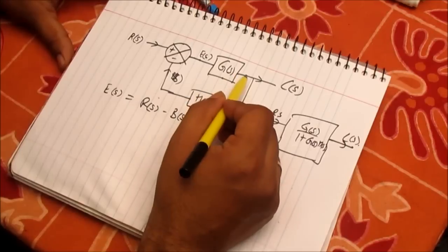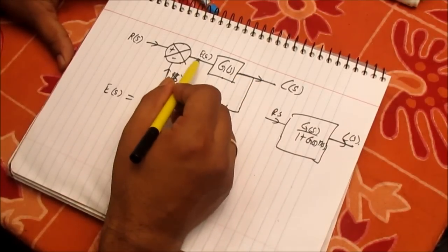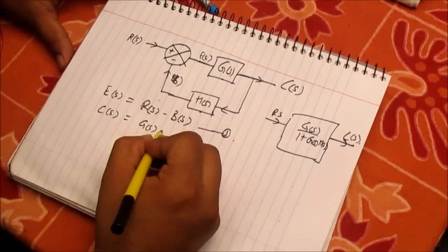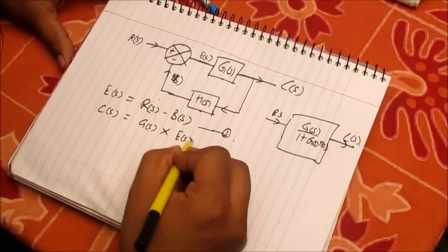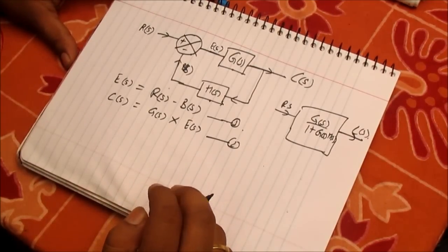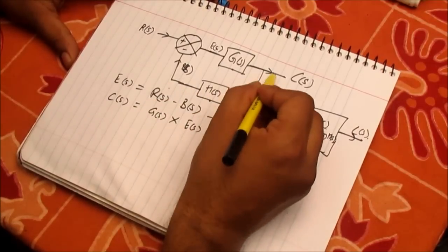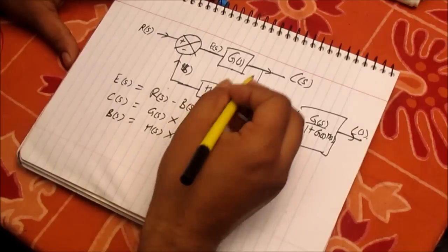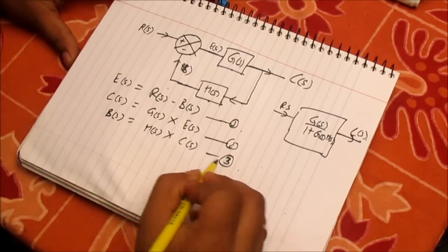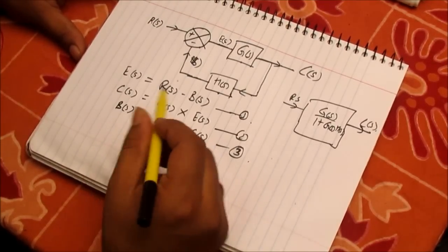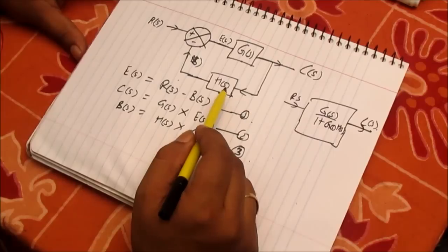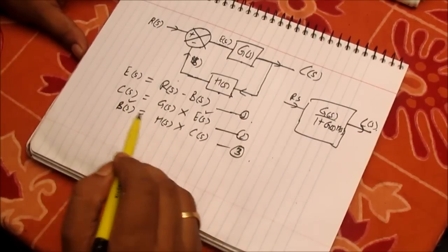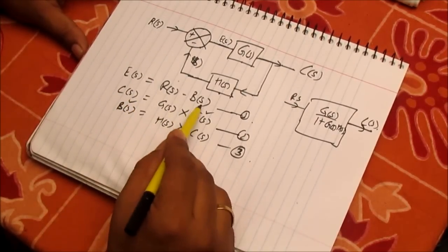Now consider the forward path block: its output is C(S) and its input is E(S), so C(S) = G(S) · E(S). This is equation 2. Coming to equation 3: we have B(S) as the output of the feedback block and C(S) as its input, so B(S) = H(S) · C(S). This is equation 3. We want to find the transfer function by eliminating E(S) and B(S) and substituting into equation 1.